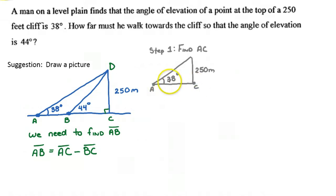So therefore, AC is the adjacent. So we have the opposite, so we use tan. So tan of 38 degrees is equal to the opposite, which is 250, over the adjacent, which is length AC.